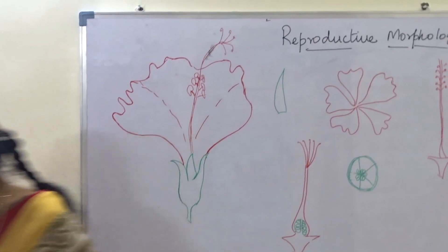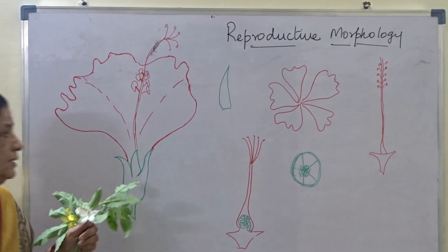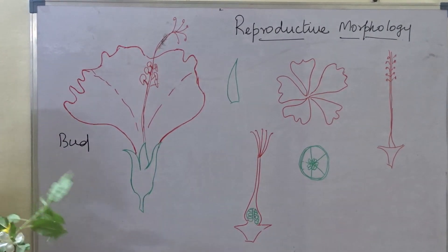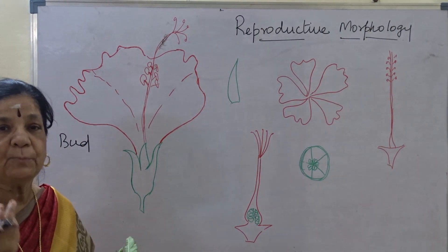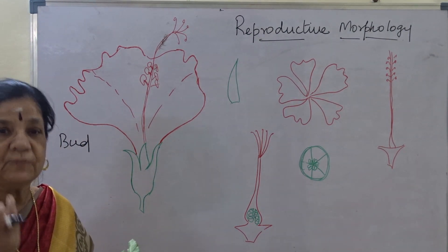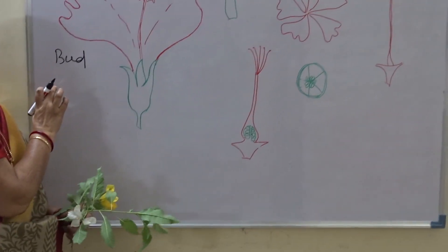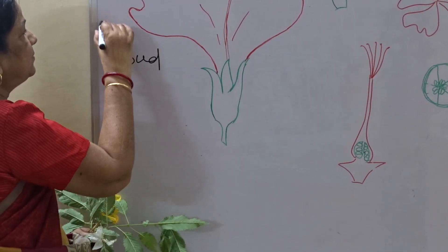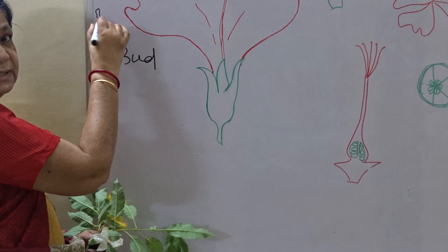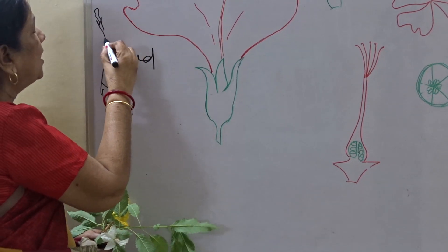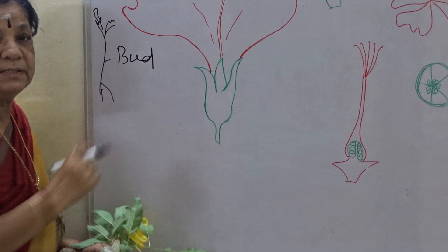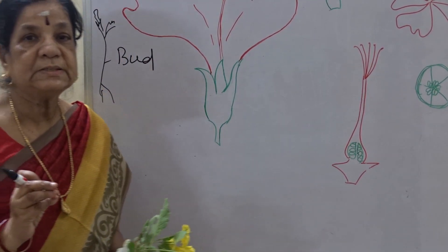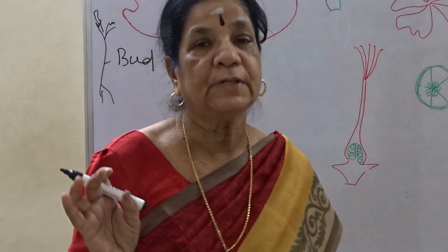For reproductive morphology, the bud is the first sign of reproduction. The appearance of a bud is the first sign of reproduction. In a given plant, the bud may be at the tip — that is called a terminal bud — or it may be from the axil of the leaf, which is known as an axillary bud.